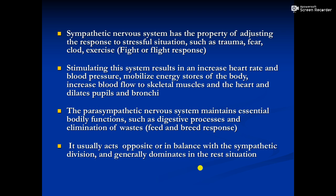Looking at the differences between the sympathetic and cholinergic systems — both are opposite in their actions in most cases. The sympathetic nervous system has the property of adjusting the response in stressful situations like trauma, fear, and exercise. Stimulation of the sympathetic system results in an increase in heart rate, increase in blood pressure, and mobilizes the energy stores of the body, also increasing blood flow to the skeletal muscle. The parasympathetic nervous system maintains essential body functions like the digestive process and elimination of waste products. Both sympathetic and cholinergic systems produce their actions opposite to each other.